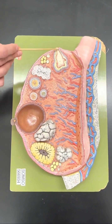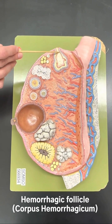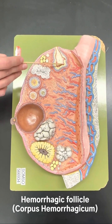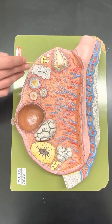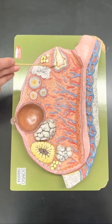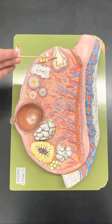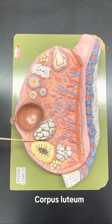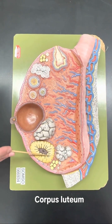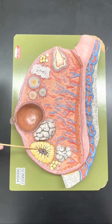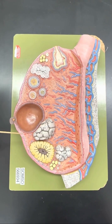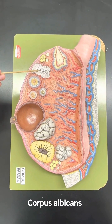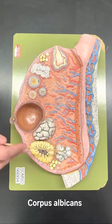Next we have the corpus hemorrhagicum, or the hemorrhagic follicle. And then we have the corpus luteum. And then lastly we have the corpus albicans.